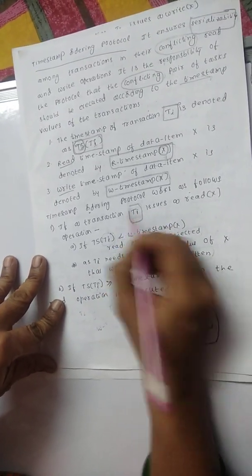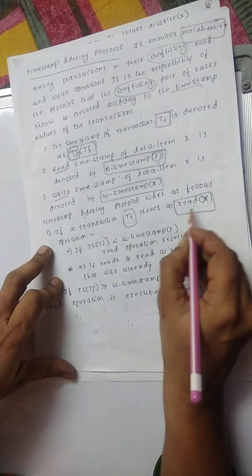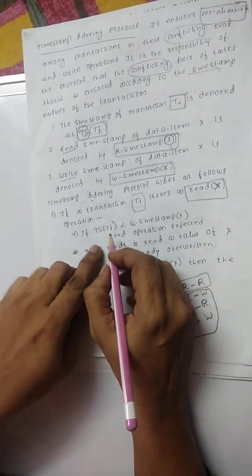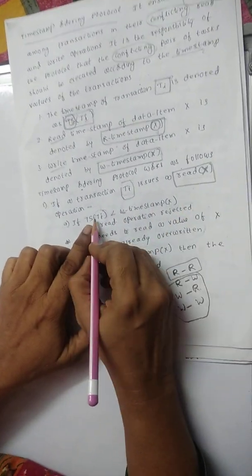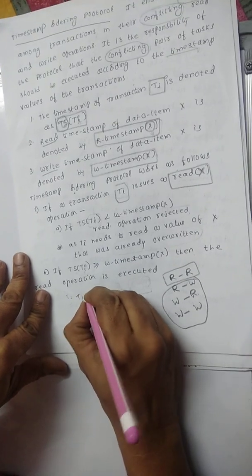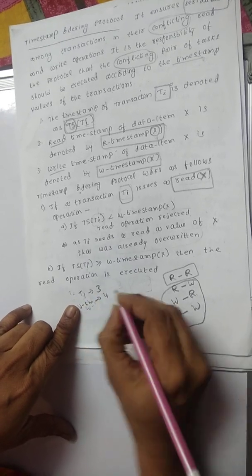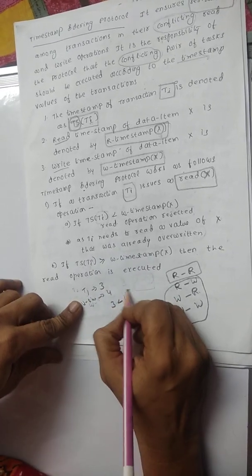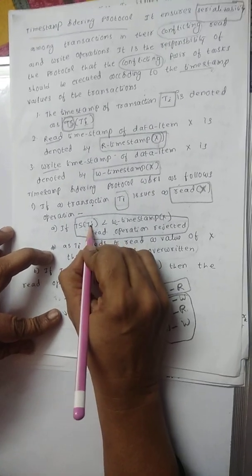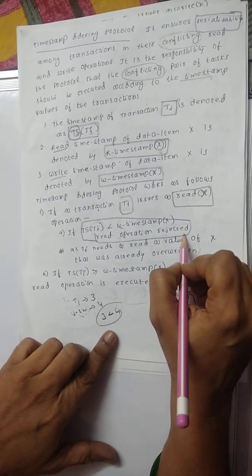When transaction Ti issues a Read(X) operation, we check the first rule: if TS of Ti is less than W-timestamp of X, the read operation is rejected. For example, if T1 has a timestamp value of 3 and the W-timestamp value is 4, since 3 is less than 4, the read operation will be rejected.